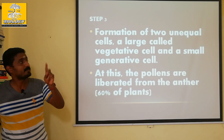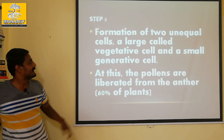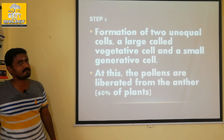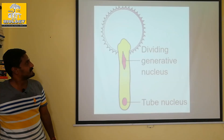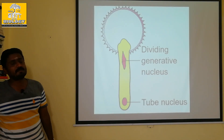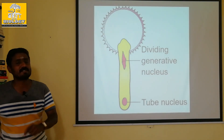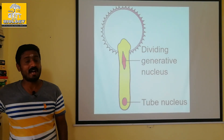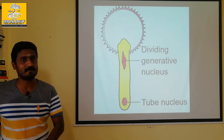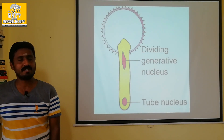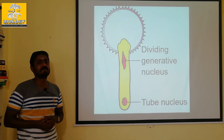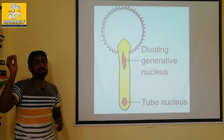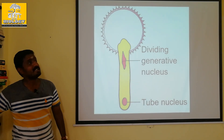That is the fourth step in 60% of the plant. Now we are going to see that fourth step in 60% of the plants. After pollination — pollination is the process — the stigma will receive the pollen grains.